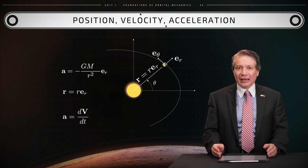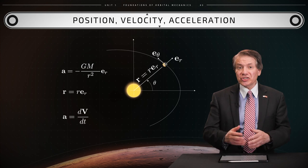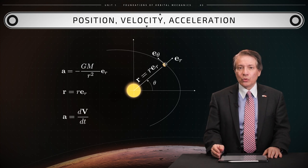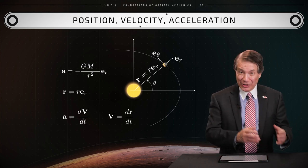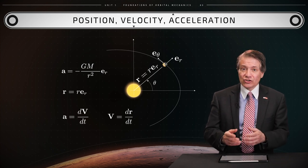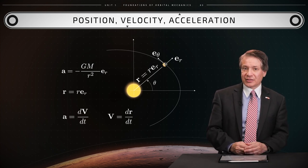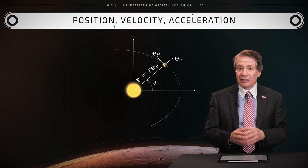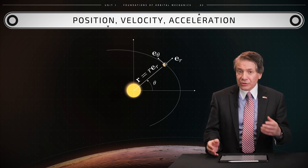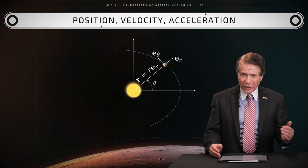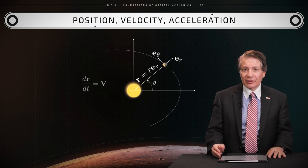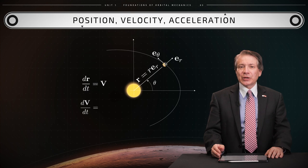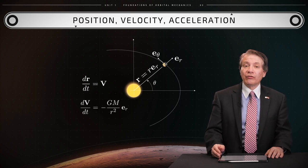The vector acceleration a of an orbiting celestial body, such as a spacecraft, equals the rate of change of its velocity vector with respect to time. The velocity is in turn the rate of change of position r with respect to time. It follows that the expression for acceleration a generates two vector equations: dr/dt equals v, and dv/dt equals negative GM times er over r squared.